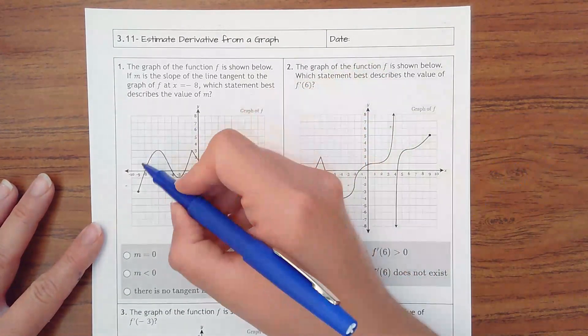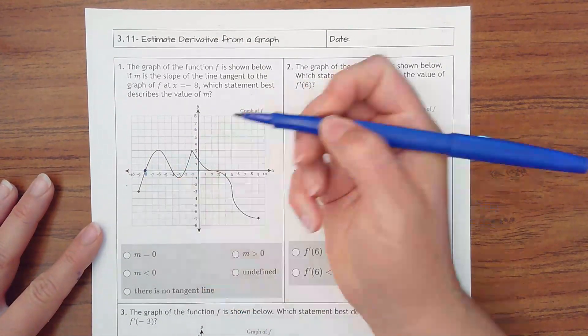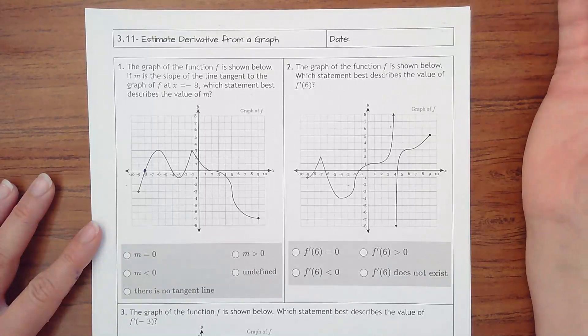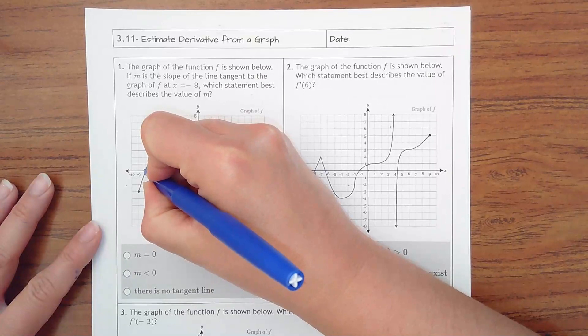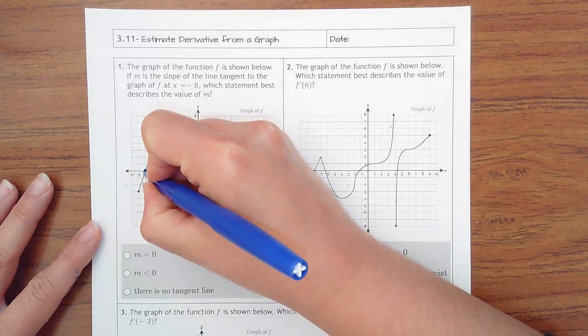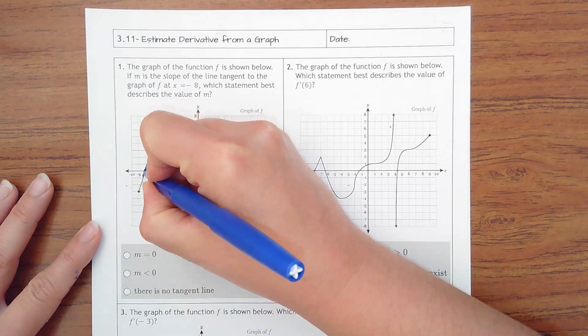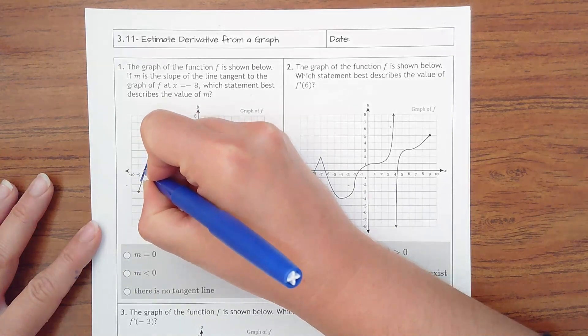So you're going to find where x is negative 8, which is right here. We're not worried about the y value there. We're worried about what the tangent line looks like. Remember, a tangent line would be zooming in and picking another point really close to it and making a line that just touches at that point.